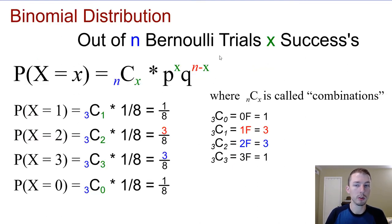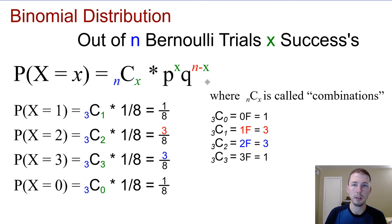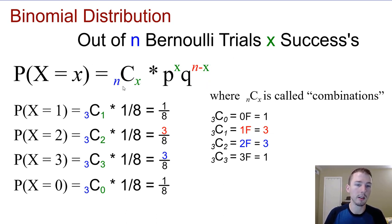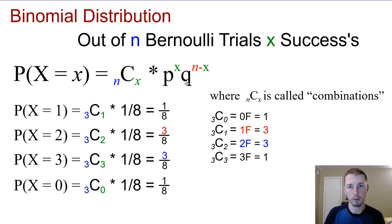The binomial distribution describes the number of successes X in n Bernoulli trials. The probability is the number of combinations multiplied by the probability of that specific outcome. With a 50-50 probability of male or female, all individual outcomes are equally likely — it's the combinations that weight them differently. That's why the probability of one girl or two girls is 3/8 instead of 1/8: because there are three combinations for each.